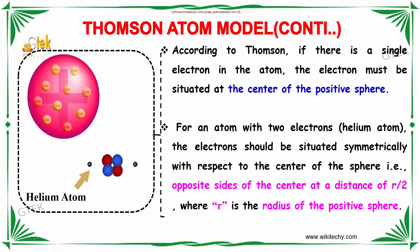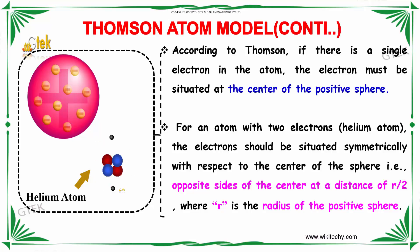According to Thomson, if there is a single electron in the atom, the electron must be located at the center of the positive sphere. For an atom with two electrons, the electrons should be situated symmetrically with respect to the center of the sphere — on opposite sides of the center at a distance of r by 2, where r is the radius of the positive sphere.